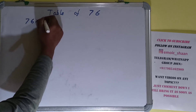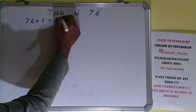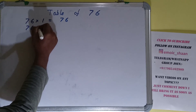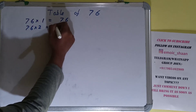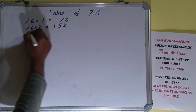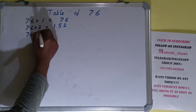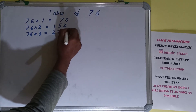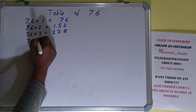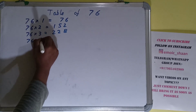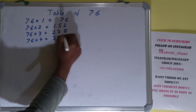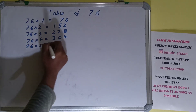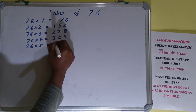76 into 1 is 76. 76 into 2 is 152. 76 into 3 is 228. 76 into 4 is 304. 76 into 5 is 380.